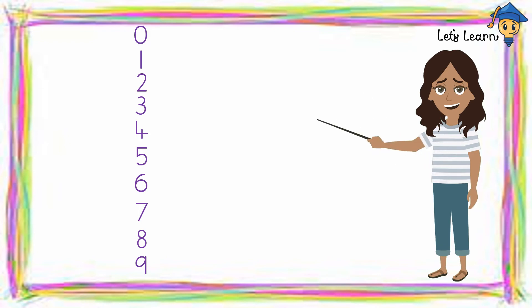That is one zero, ten. Then one one, eleven. One two, twelve. One three, thirteen. One four, fourteen. One five, fifteen. One six, sixteen. One seven, seventeen. One eight, eighteen. One nine, nineteen.